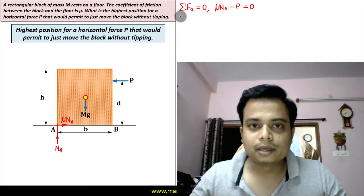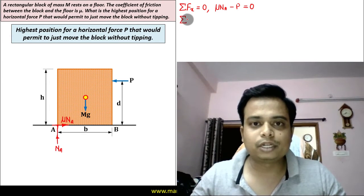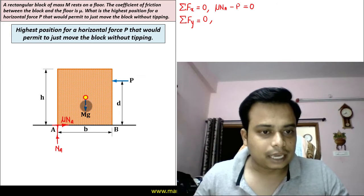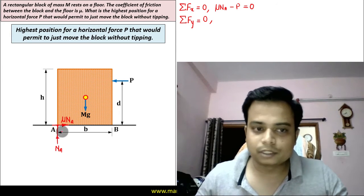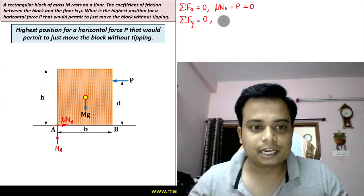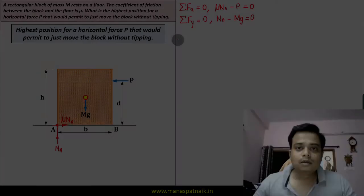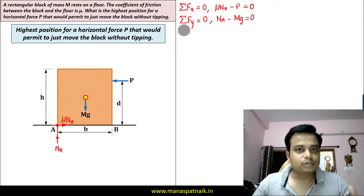Now let's check out our equation number two, that is going to be the summation of all the forces in y-direction. Now we've got this mg downwards, N_A upwards. Well this is positive, this is negative. N_A minus mg is equal to zero. Now guys, for this particular problem we need to take the moment equation also.